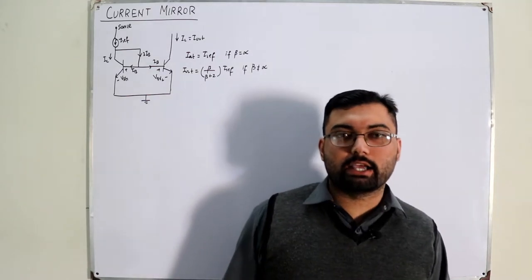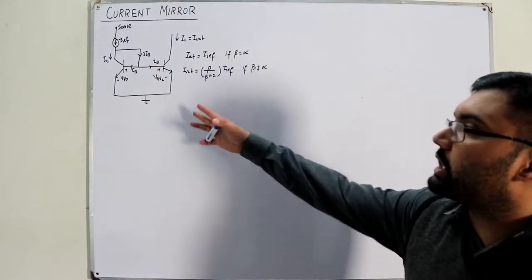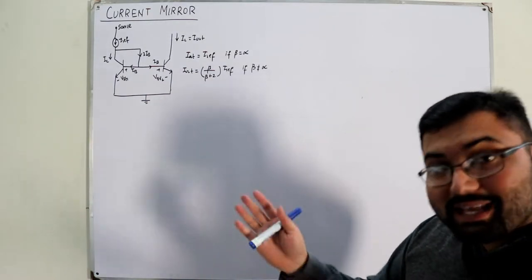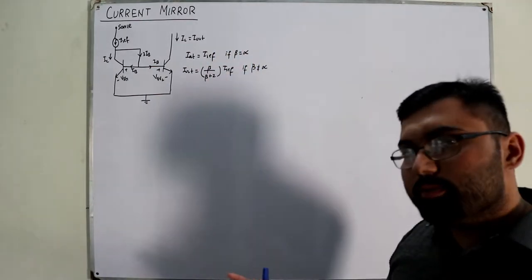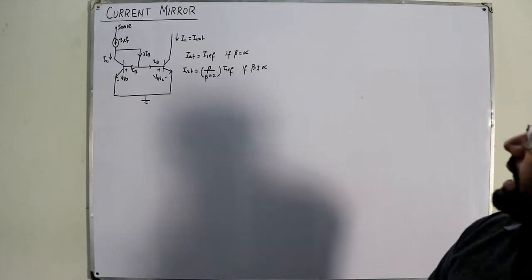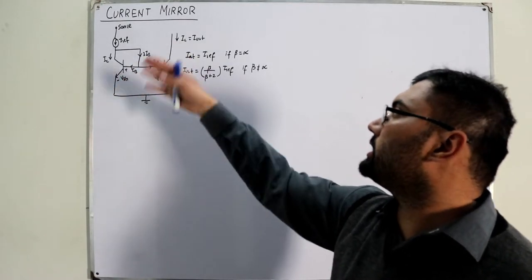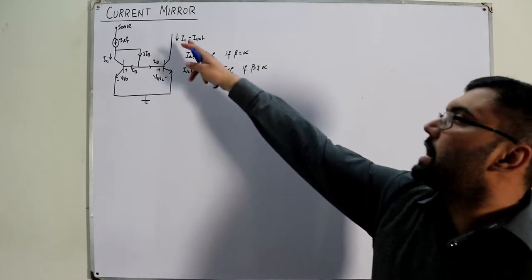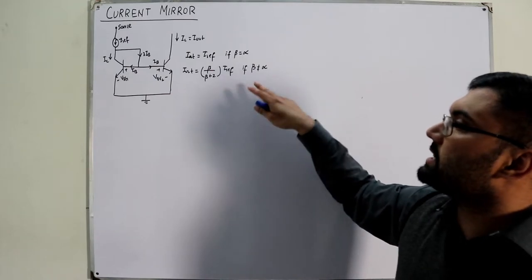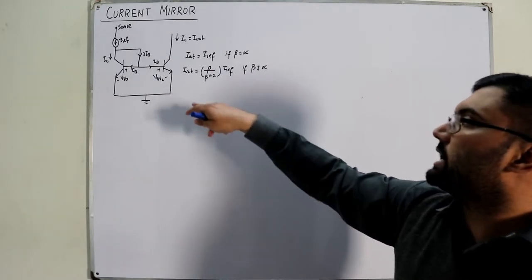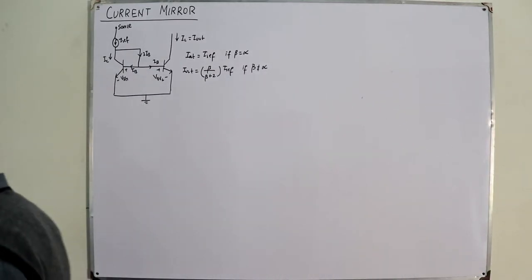Assalamu alaikum. Continuing the topic of the current mirror circuit — in the previous video we covered the basic current mirror circuit where a reference current flows, the collector of one transistor is shorted to its base, and both bases are connected together. The output current equals the reference current if beta is infinite, or beta/(beta+2) times I_reference if beta is finite.